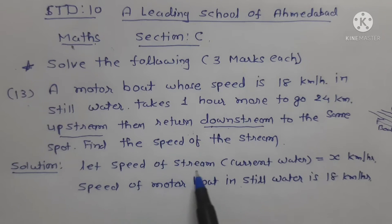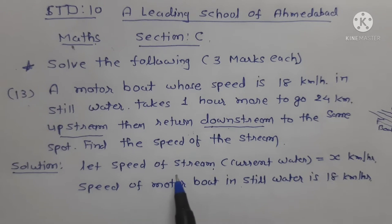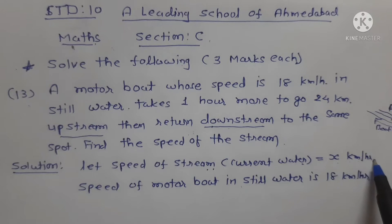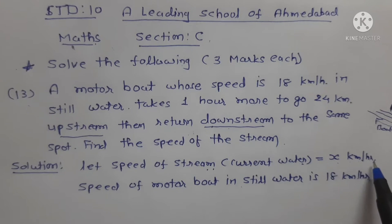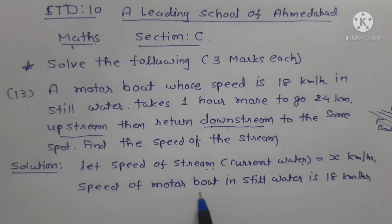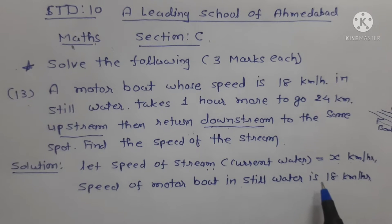Let the speed of the stream, meaning current water, equal to x km per hour. It is given that the speed of the boat in still water is 18 km per hour.